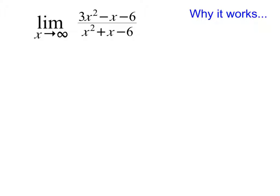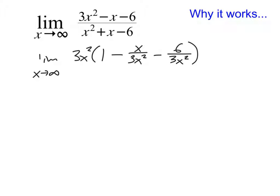On the top, I'm going to take that 3x squared — specifically the term with the highest exponent — and factor that out of every term on the top. 3x squared divided by 3x squared gives me 1, minus x over 3x squared, minus 6 over 3x squared. This is certainly not factoring like you normally do. Normally we don't factor something out unless it can come out of every term, but notice that if I did multiply 3x squared back into the parentheses, I would still get what I started with.